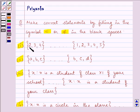The elements of this set are 2, 3, and 4, and the elements of this set are 1, 2, 3, 4, 5. 2, 3, 4 are present in this set also, so we will say that this is a subset of this set.